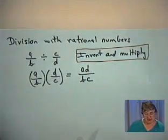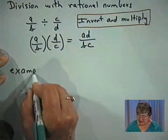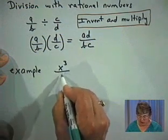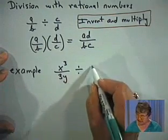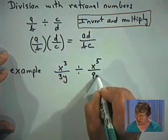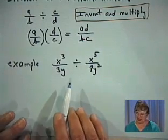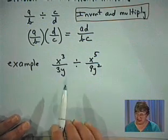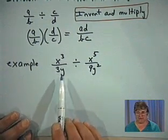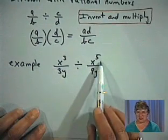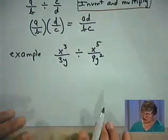Let's take some examples. Suppose we have X cubed divided by 3Y — that's one rational expression — and that expression is divided by X to the fifth over 9Y squared. A word of caution here: don't begin canceling factors until you invert and multiply, because you could be canceling incorrectly. If something in the denominator were a common factor to the numerator, it would be incorrect to cancel those out. So the first thing you need to do is to invert and multiply.